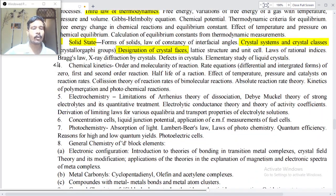Point number four: Chemical kinetics - order and molecularity of reaction, rate equations differential and integrated forms of zero, first and second order reactions, half-life of a reaction, effect of temperature, pressure and catalyst on reaction rate, collision theory of reaction rates of bimolecular reactions, absolute reaction rate theory, kinetics of polymerization and photochemical reactions.